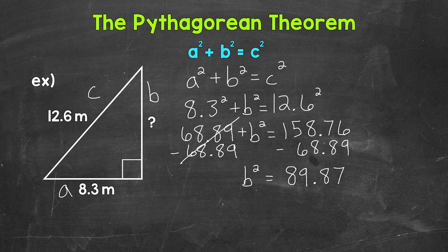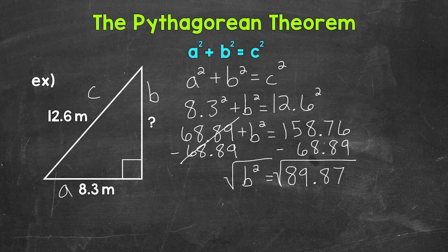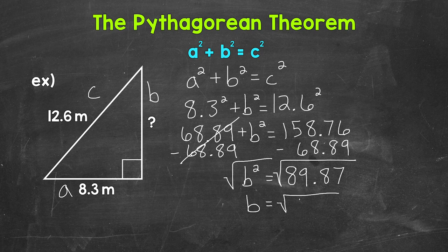So we are left with b squared equals 158 and 76 hundredths minus 68 and 89 hundredths, which gives us 89 and 87 hundredths. So now we have b squared equals 89 and 87 hundredths. We need to isolate b — we need to figure out what b equals. Since b is being squared, we can take the square root in order to isolate b. So let's take the square root of b squared. Whatever we do to one side of the equation, we must do to the other, so take the square root of 89 and 87 hundredths. B is now isolated, so we have b equals the square root of 89 and 87 hundredths.